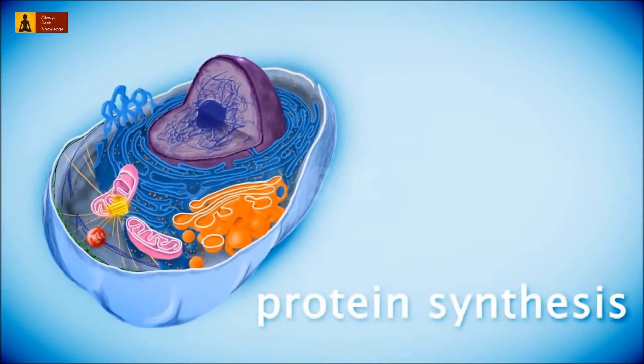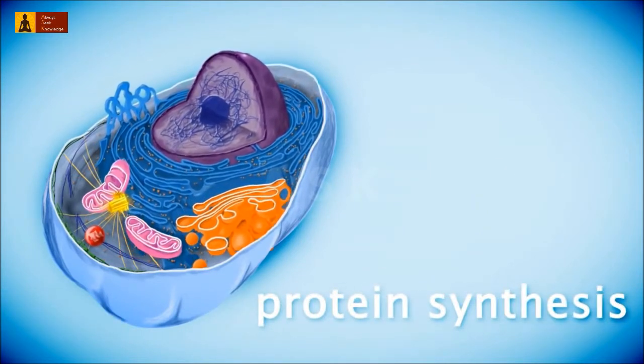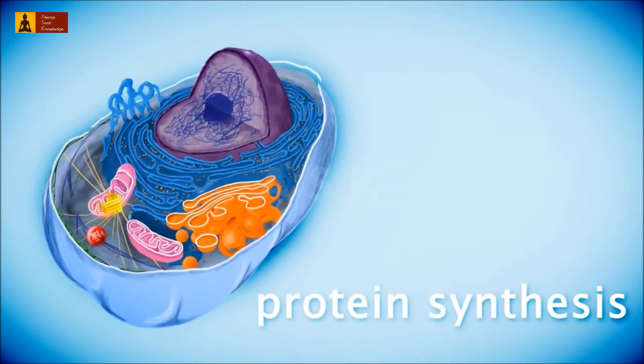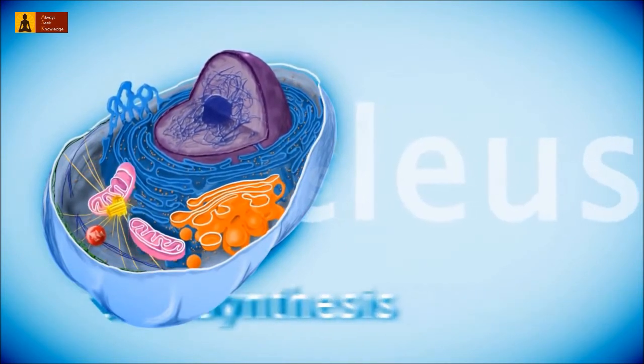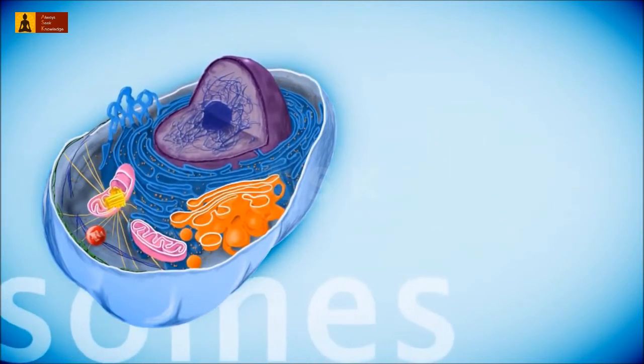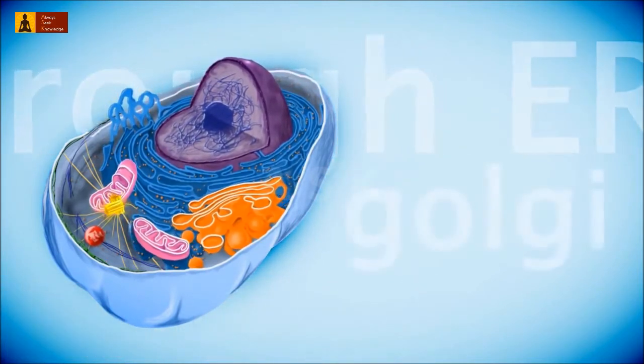Animal cells produce proteins that play a critical role in performing the cell's specific functions. The process of synthesizing proteins requires the nucleus, free and bound ribosomes, rough endoplasmic reticulum, and the Golgi apparatus.